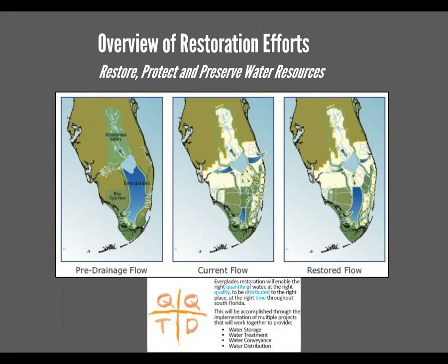To do that, we essentially have to focus on the quality, the quantity, the timing, and the distribution of water throughout the ecosystem. That's the cornerstone of the Comprehensive Everglades Restoration Plan. Some of you may have heard of CERP — the Comprehensive Everglades Restoration Plan. It's been around for a while, it's a huge program with lots of agencies involved and lots of money. We're going to restore water quality, quantity, and timing through a series of projects including storage, treatment, conveyance, and distribution of water.